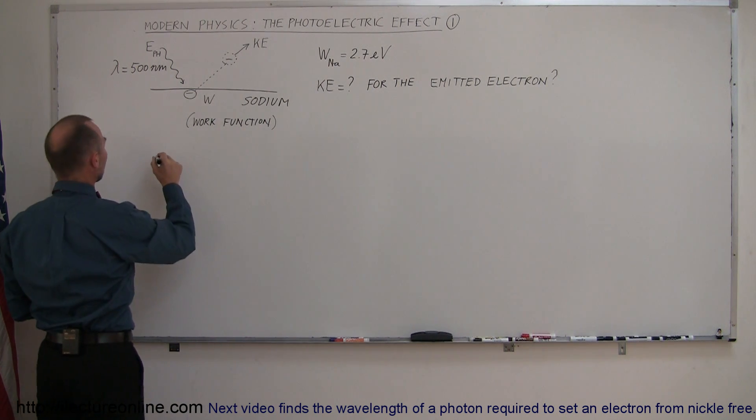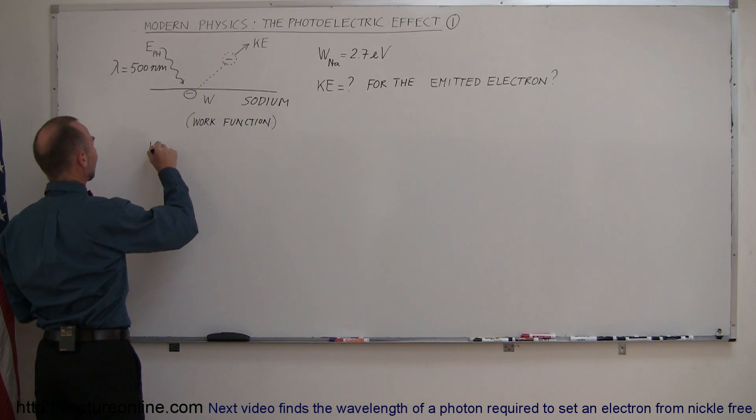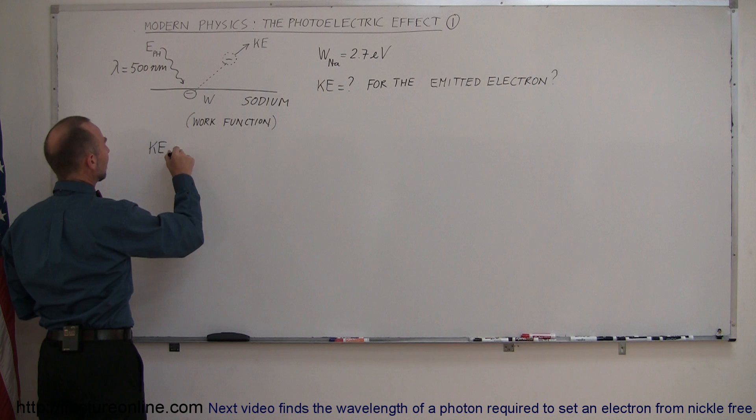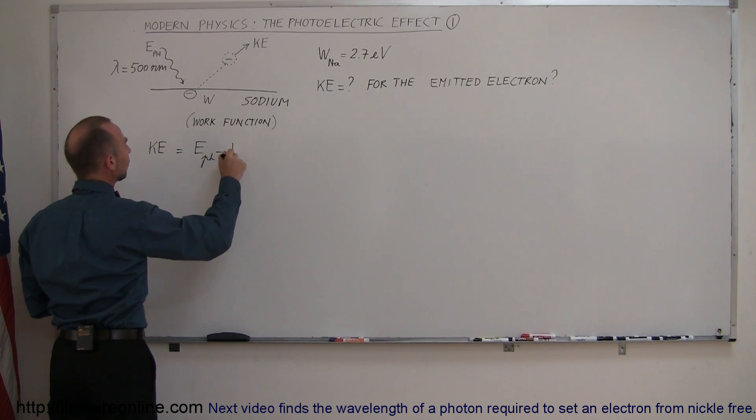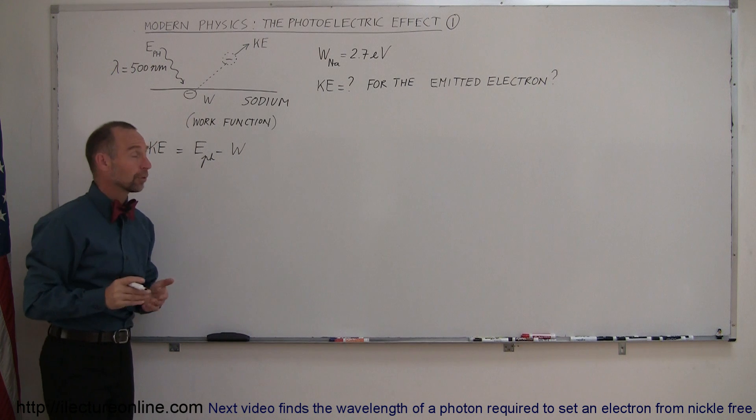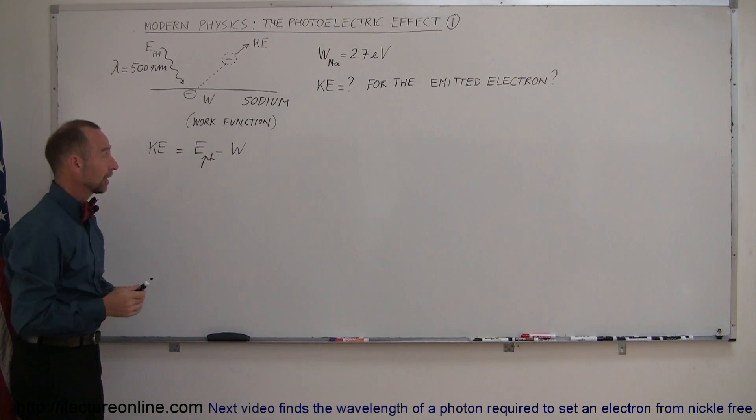So the equation then goes, any kinetic energy that the electron may have is equal to the energy that comes in from the photon minus the work function energy required to overcome the work function. If the energy of the photon is large enough, greater than the work function, the leftover will then become kinetic energy for the electron.